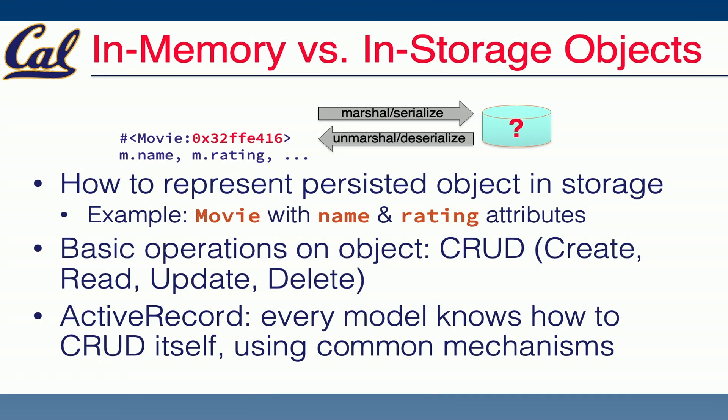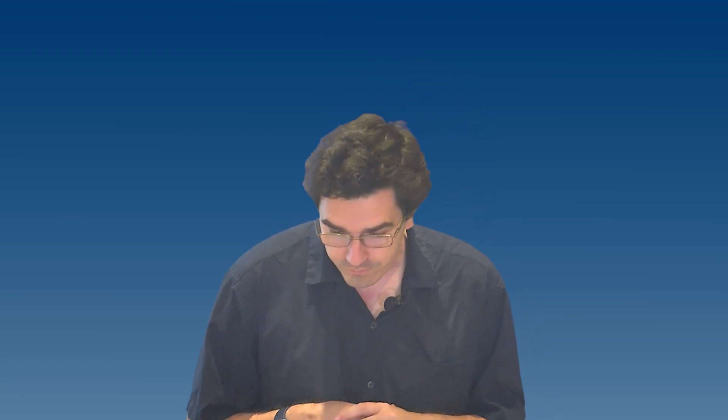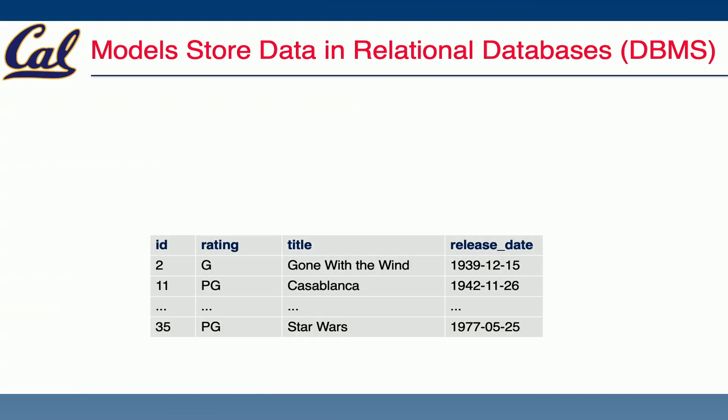With Rails, we're going to have an object typically named Movie — capital M is our class name, and class names always start with a capital letter. It's going to have some methods as attributes, in this case name and rating. You might also have a title, a description, a release date, and so on. Each of the operations we might want to do — what we call CRUD: create, read, update, and delete — will be provided by ActiveRecord, and we're going to use common ActiveRecord patterns to update those attributes.